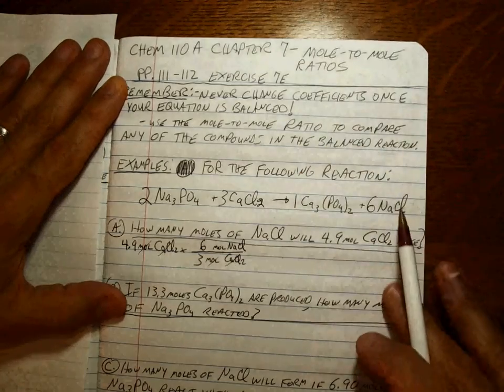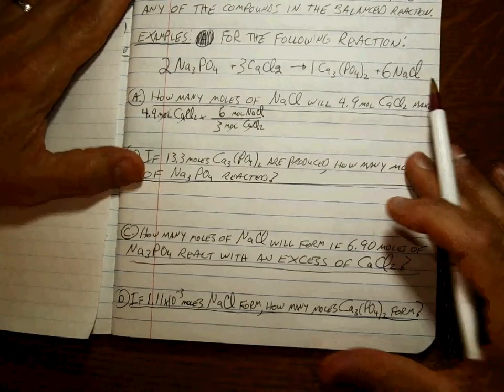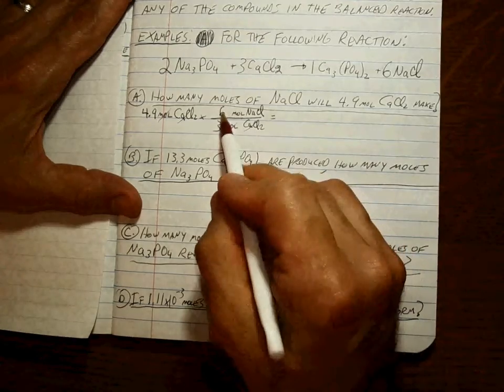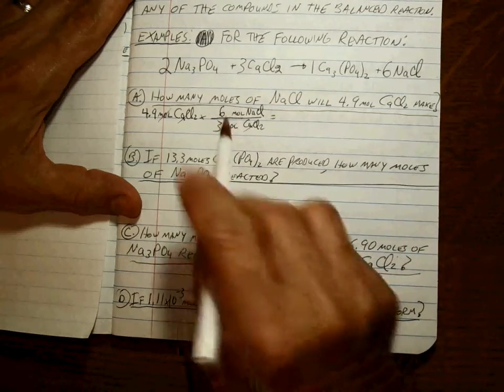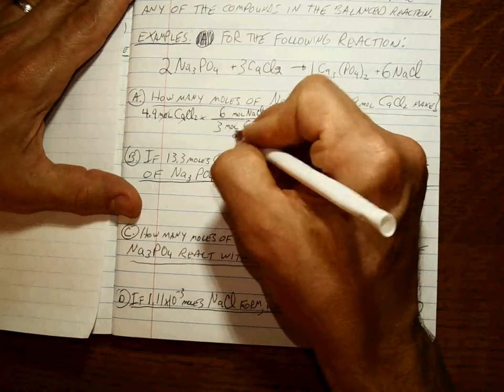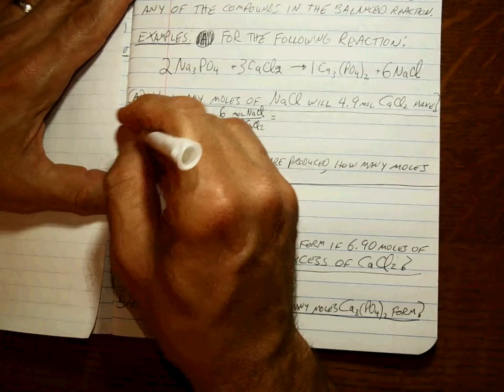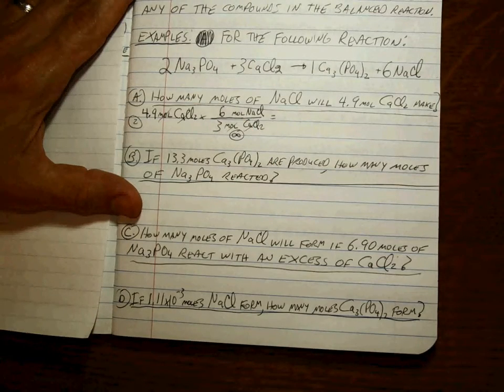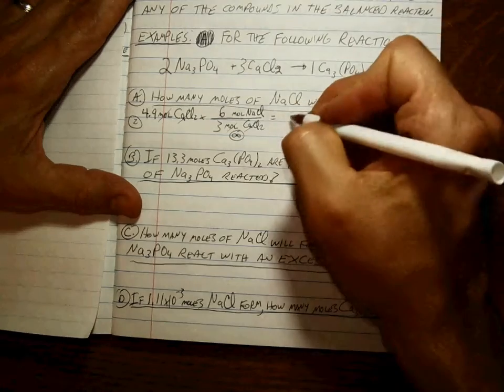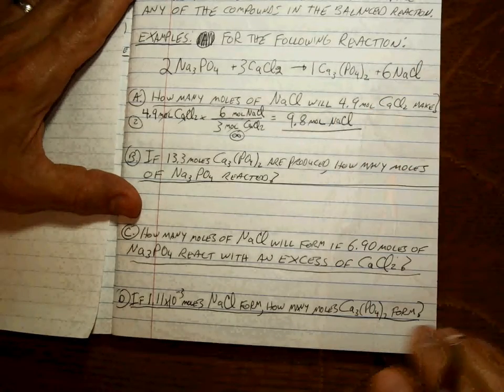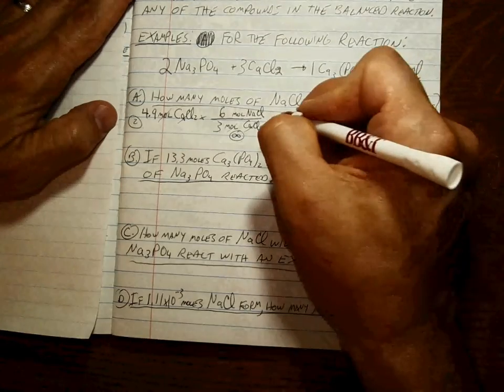Okay, so what's the result here? Well, how many sig figs is in this ratio? Because it's a balanced equation, it's exact. It's an exact ratio. Okay, so that makes it easier. 4.9 has two sig figs, right? So what's 4.9 times 6 divided by 3? That's 9.8 moles of sodium chloride. We're done. That's it. That's all there is to it. Not too bad.